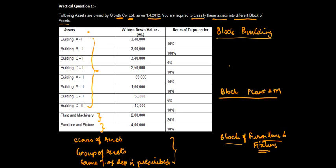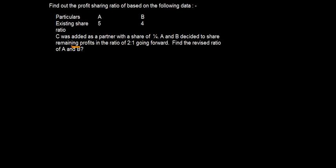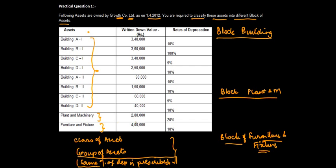But within these groups of assets, you need to sub-classify those buildings which have the same percentage of depreciation prescribed. Within this block, you put together a sub-block wherein the same percentage of depreciation applies. Looking at the buildings, some have depreciation of 5%, some have 10%, and some have 100%. So building by itself is not one single block — there are three separate groups within the building.